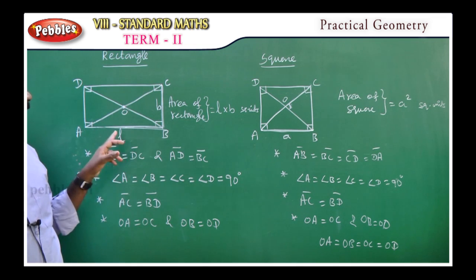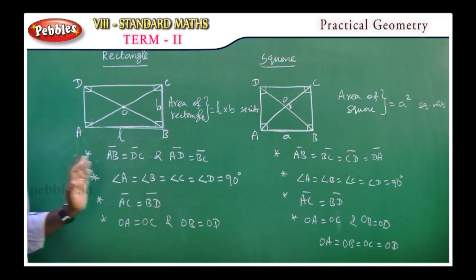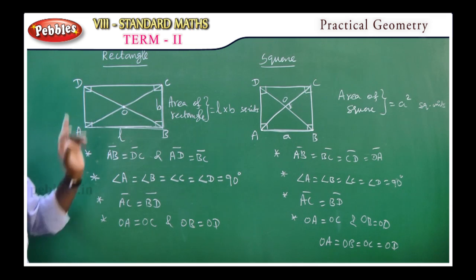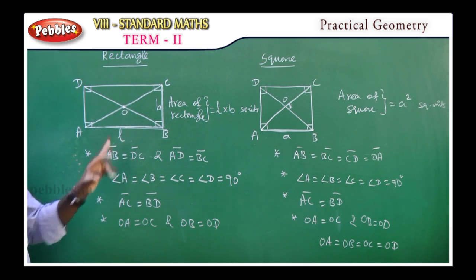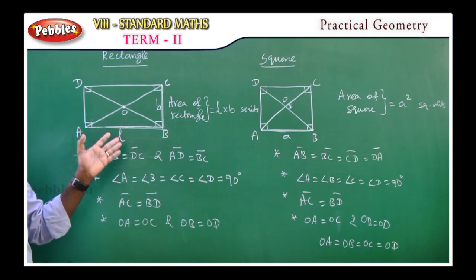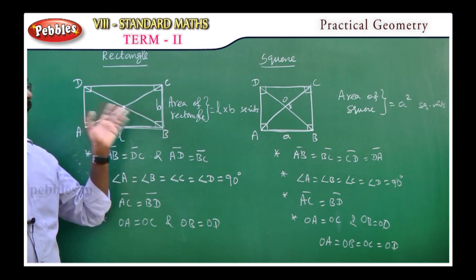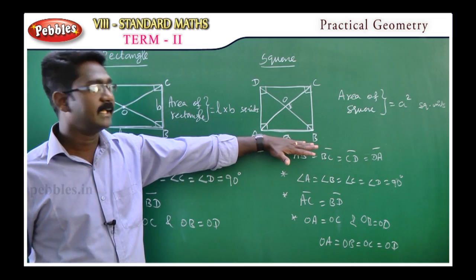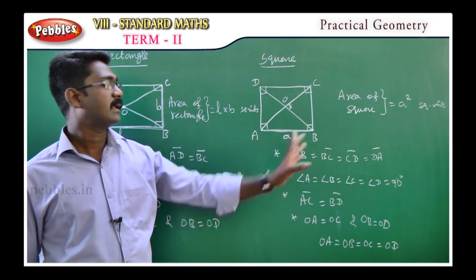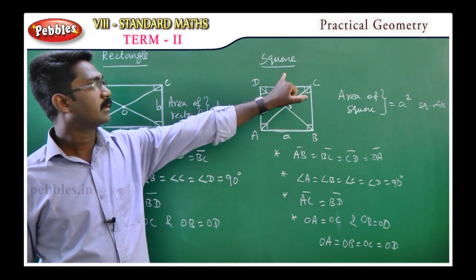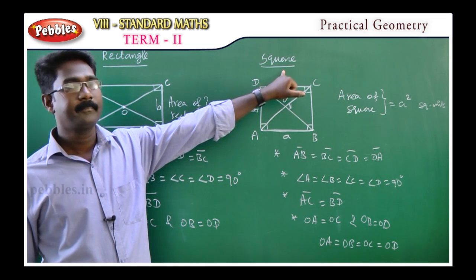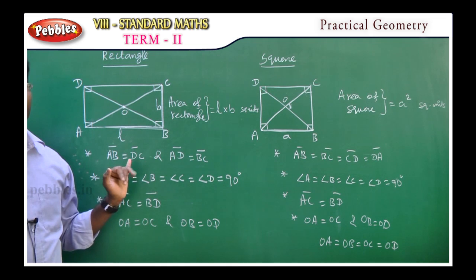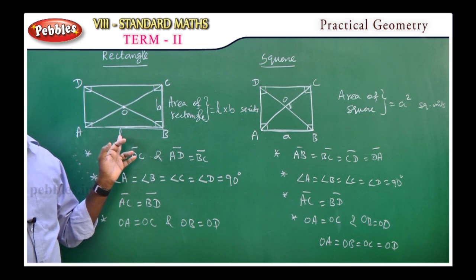There are two types for constructing a rectangle. First type: length and breadth are given. Second type: one side and one diagonal are given. For constructing a square, there is also a type where one side is given, and another where a diagonal is given.